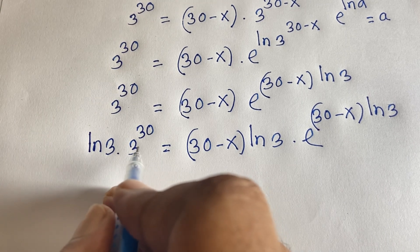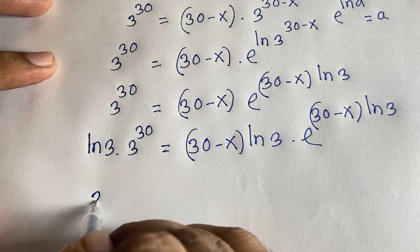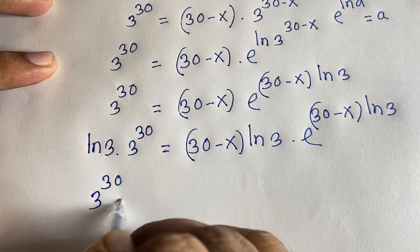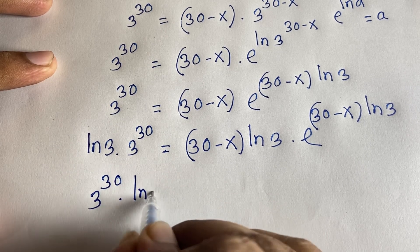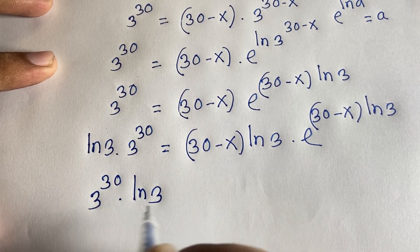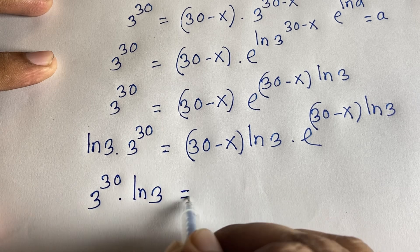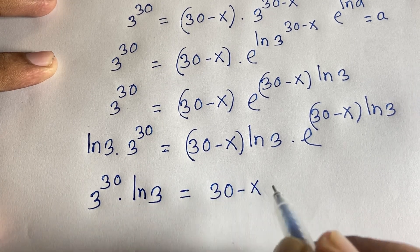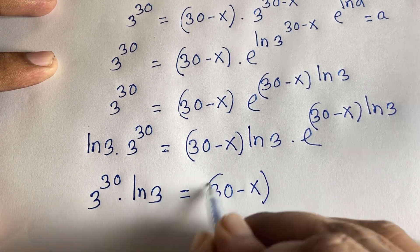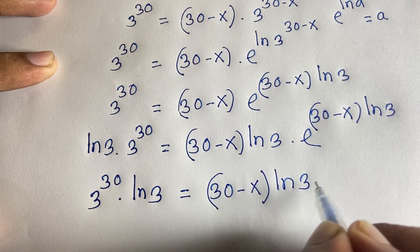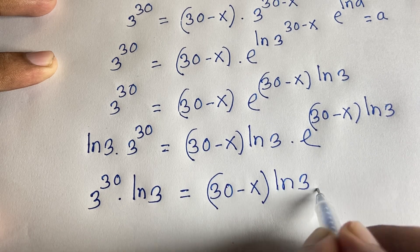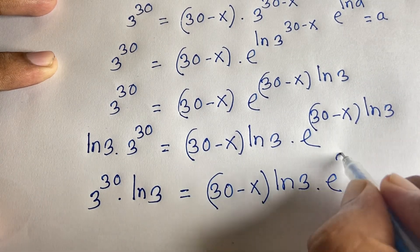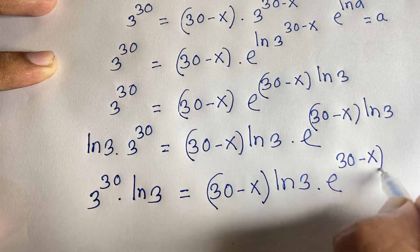After multiplying both sides by ln 3, the left side becomes e to the power (30 times ln 3), and the right side is (30 minus x) times ln 3 times e to the power (30 minus x) times ln 3.